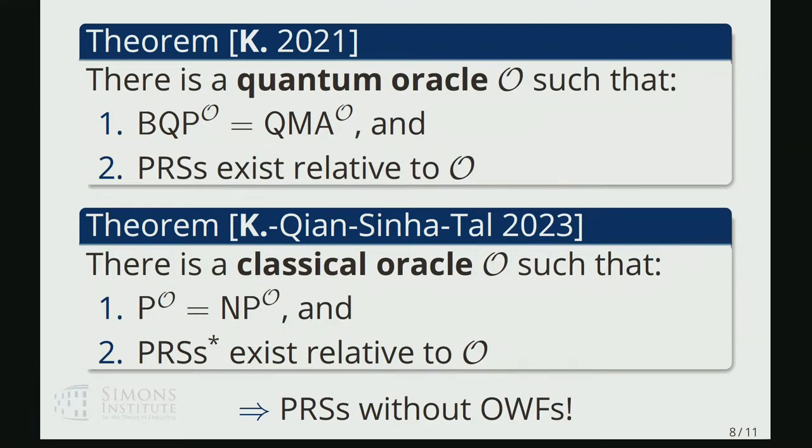one that uses a quantum black box, or a quantum oracle, where we can show that BQP and QMA, which are kind of the quantum generalizations of P and NP, coincide. And yet, nevertheless, you still get pseudorandom states relative to this oracle. And similarly,